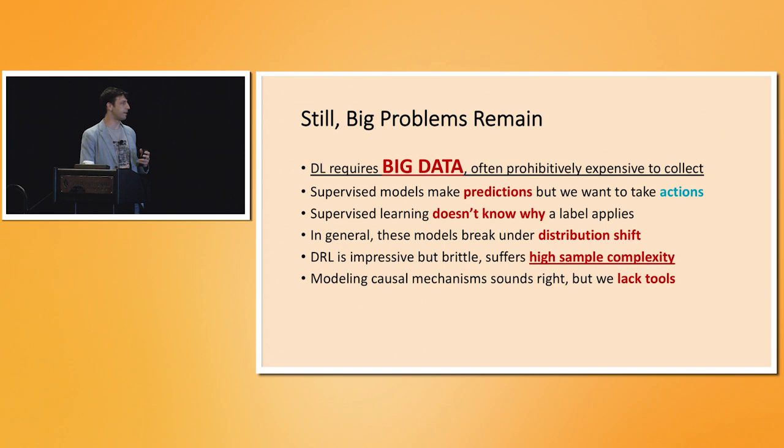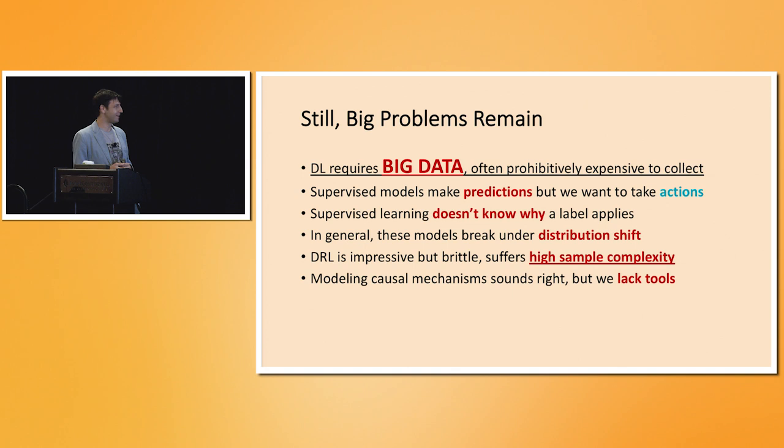Among the big challenges right now, just throwing deep neural networks at things isn't the end of the story for most problems we care about. The problem we're going to focus on here is the extreme data dependency of deep neural networks. There are other problems too — like we're good at making predictions but not necessarily great at estimating effects of interventions.